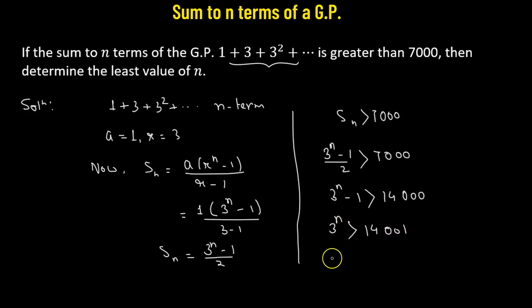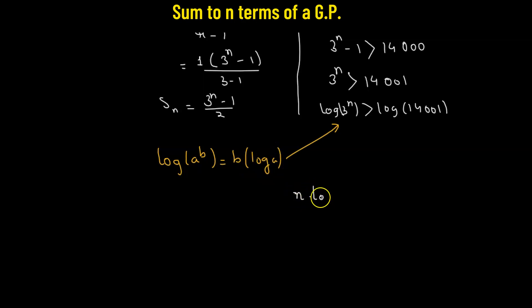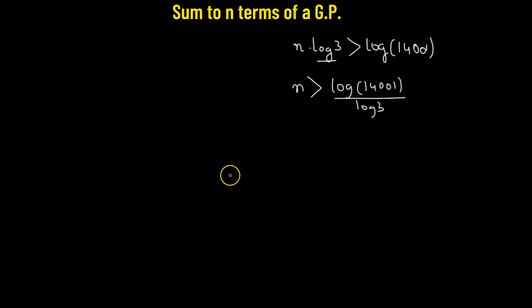To obtain the value of n, we take the logarithm on both sides: log of 3 raised to the power n is greater than log of 14001. Using the logarithm power property — log of a raised to the power b equals b times log a — we get n times log 3 greater than log 14001. Dividing both sides by the positive quantity log 3, we have n greater than log 14001 divided by log 3.